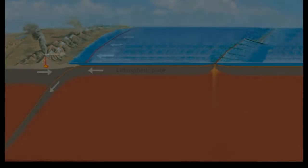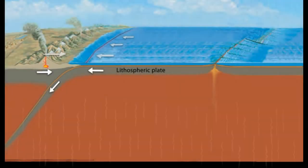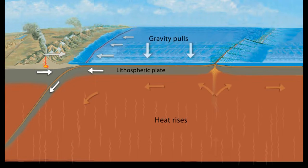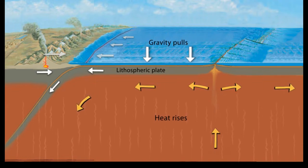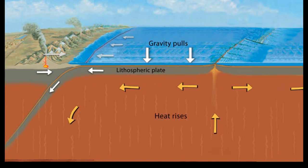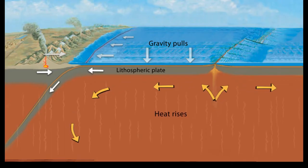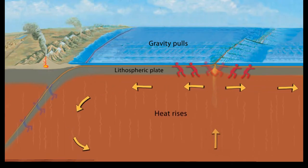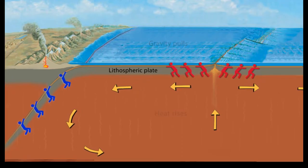In this big picture view, we see that lithospheric plates are part of a planetary-scale thermal convection system. The energy source for plate tectonics is Earth's internal heat, while the forces moving the plates are the ridge push and slab pull gravity forces.